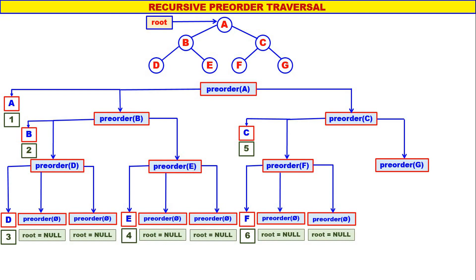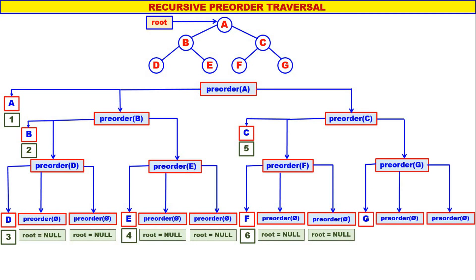Let us come to pre-order of G. G is not equal to null, therefore display G. Left of G is null, therefore pre-order of null. Right of G is null, therefore pre-order of null. G will be the seventh one to be displayed. Pre-order of null: when root is null, nothing happens.